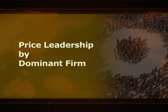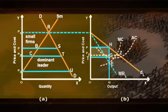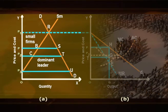Moving on to price leadership by a dominant firm. The duopoly market witnesses price leadership by a dominant firm when one firm has a substantial share of the market while other firms are of smaller size. It is assumed that the large firm has information on market demand for the product and also knows the production costs, especially the marginal cost, of small firms. This implies that the dominant firm has the mechanism to estimate product supply by small firms at different prices. On this basis, the large firm projects its residual market demand, as explained in the figure.